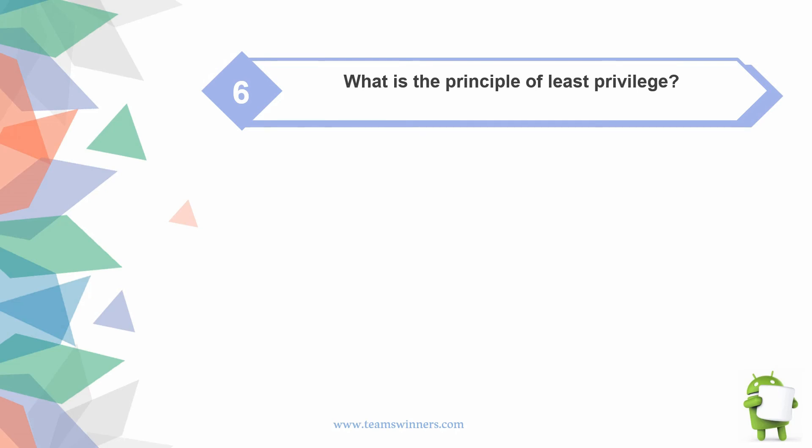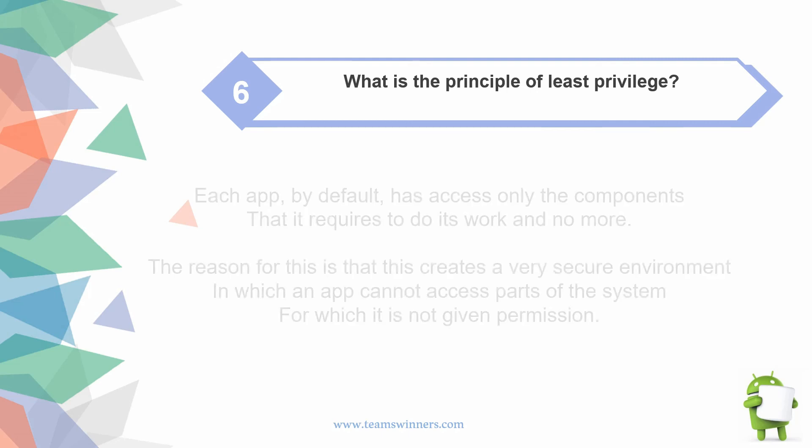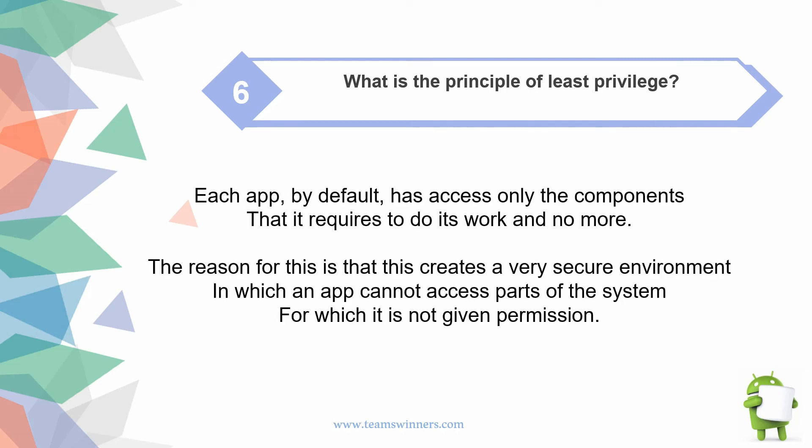What is the principle of least privilege? Each app, by default, has access only to the components that are required to do its work and no more. The reason for this is that it creates a very secure environment in which an app cannot access parts of the system for which it has not been given permission.